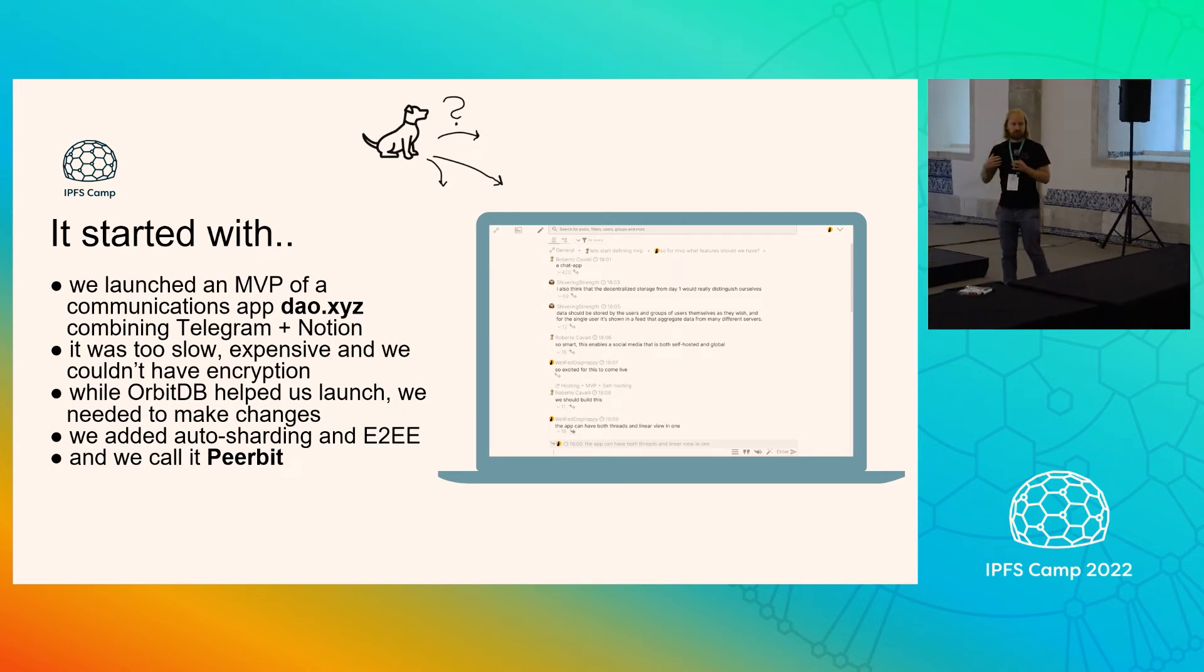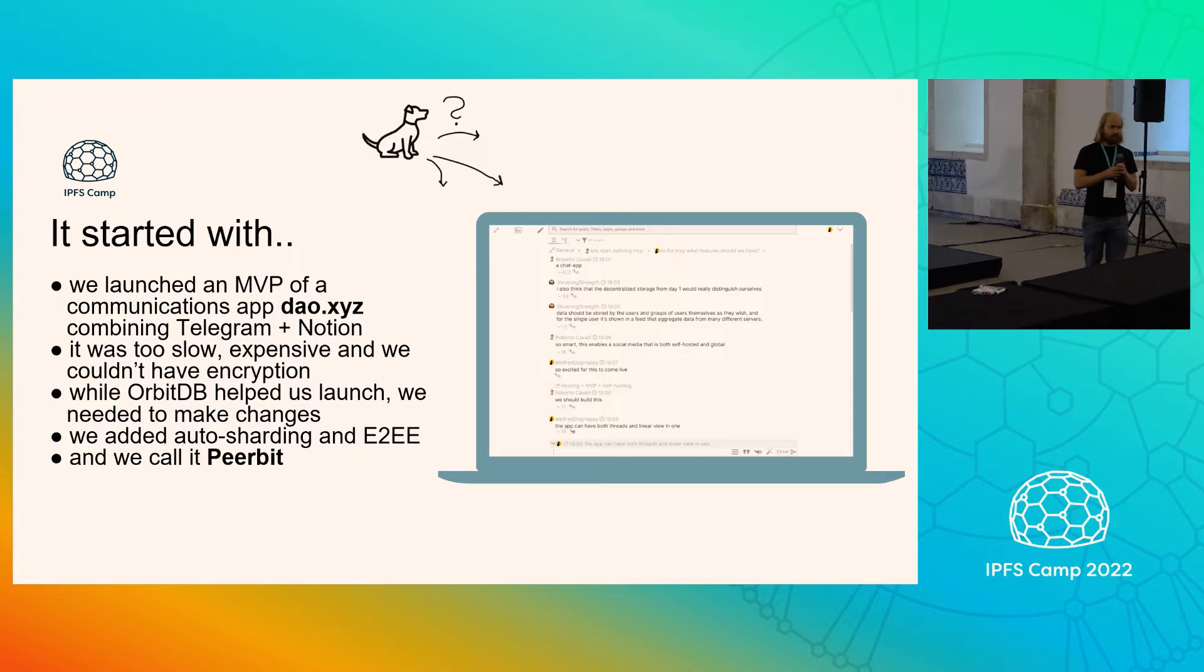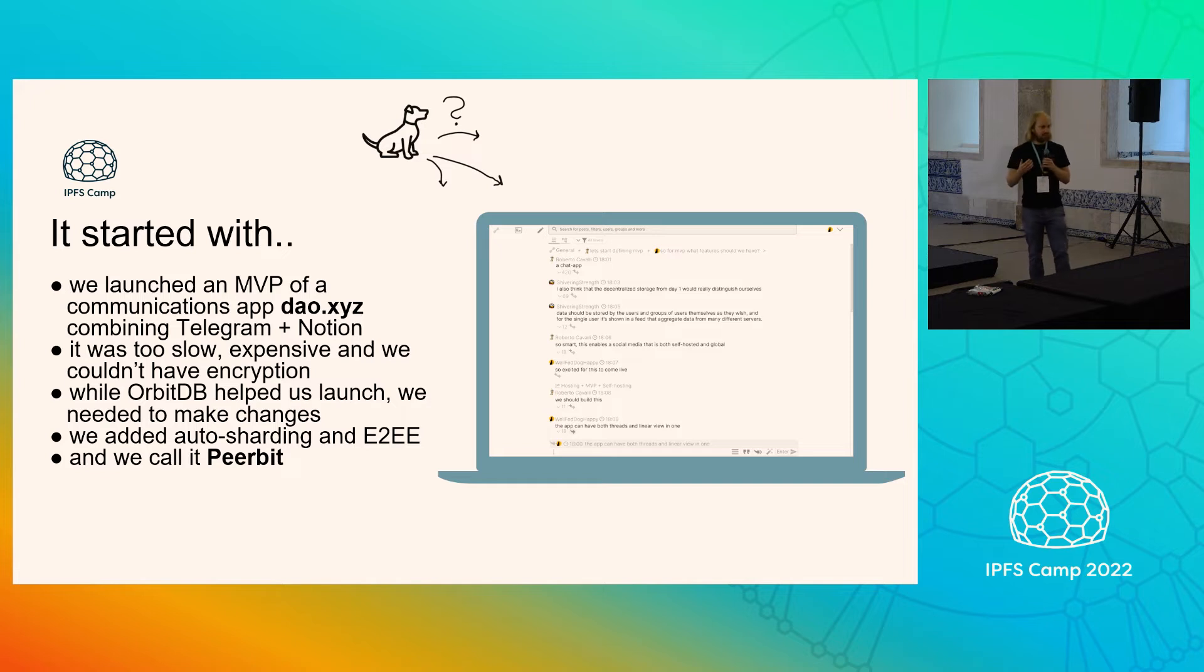And we used conventional blockchain methods like authenticate with MetaMask, and then we built it back on OrbitDB, but pretty quickly we realized that it was too slow, like sending message tests took forever, it was expensive, and encryption, impossible.